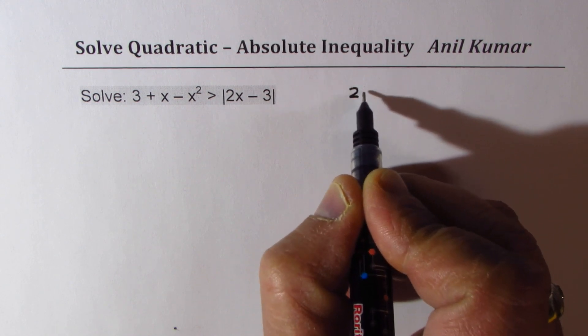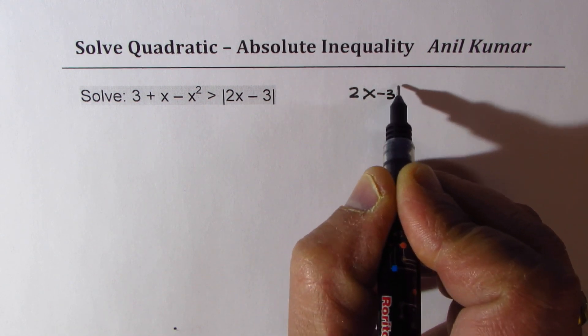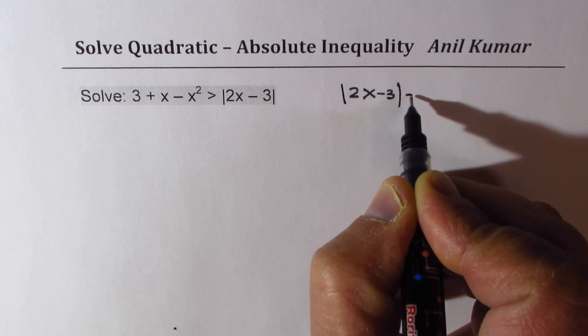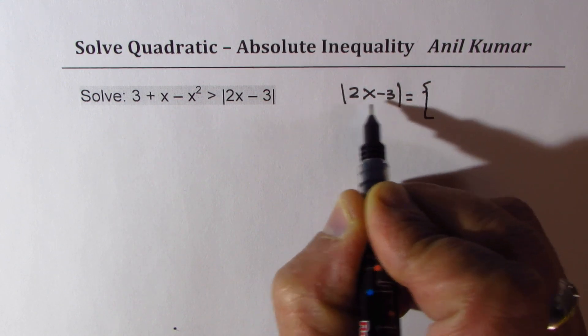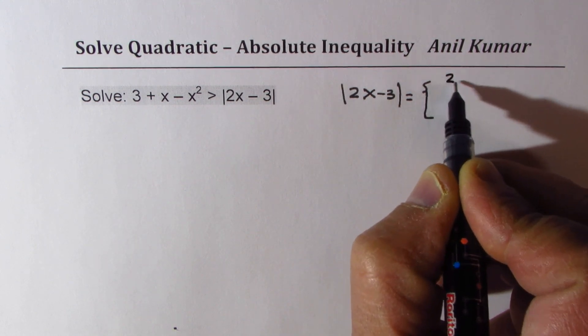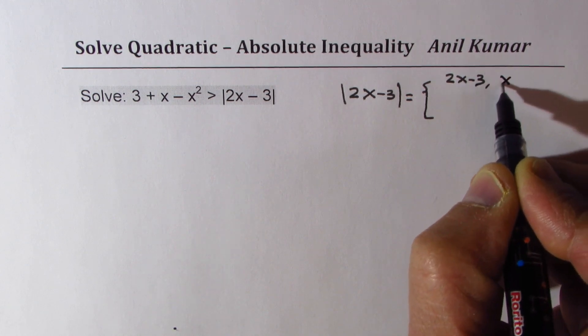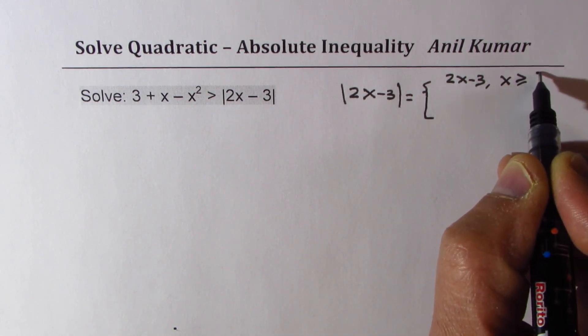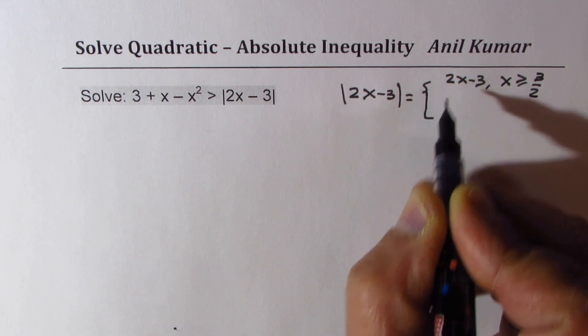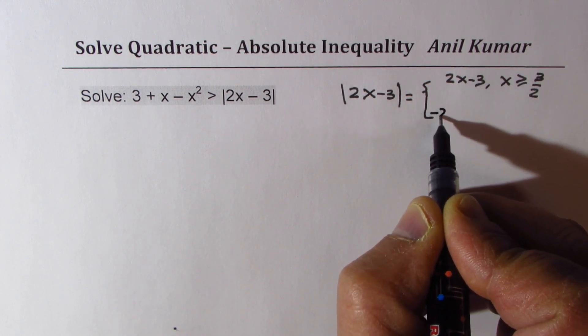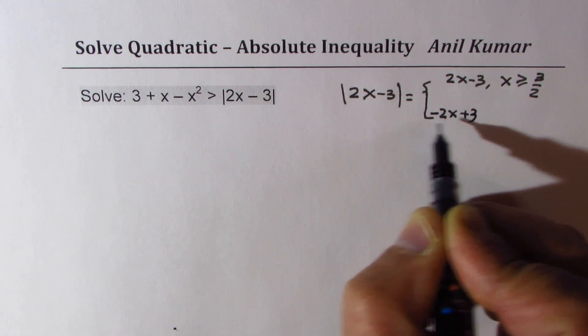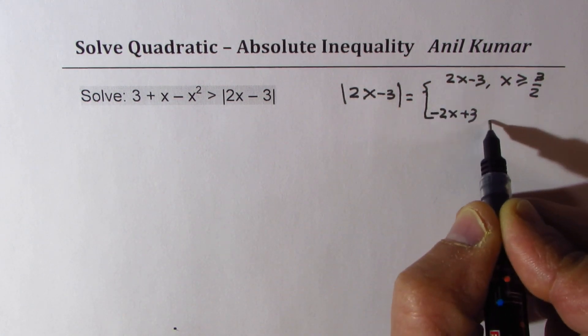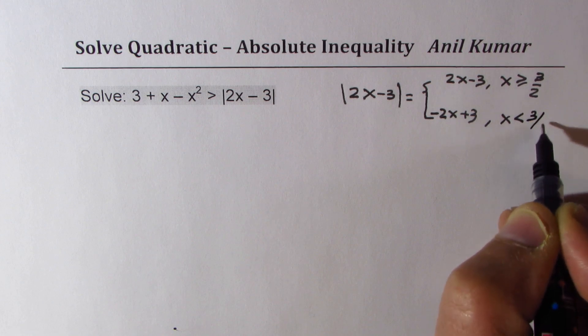So let me rewrite the absolute value of 2x minus 3 as equal to combination of two linear functions which are 2x minus 3 when x is greater than equal to 3 over 2. And negative of this, that is negative 2x plus 3, for x less than 3 by 2.